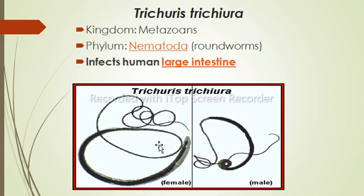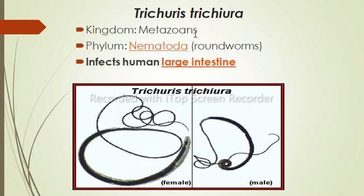Trichuris trichiura is commonly known as whipworm, which is the common name of this worm due to its structure — it looks like a whip with a wider handle. Trichuris trichiura is a roundworm that causes trichuriasis. It belongs to kingdom Metazoa, phylum Nematoda, and infects the human large intestine.